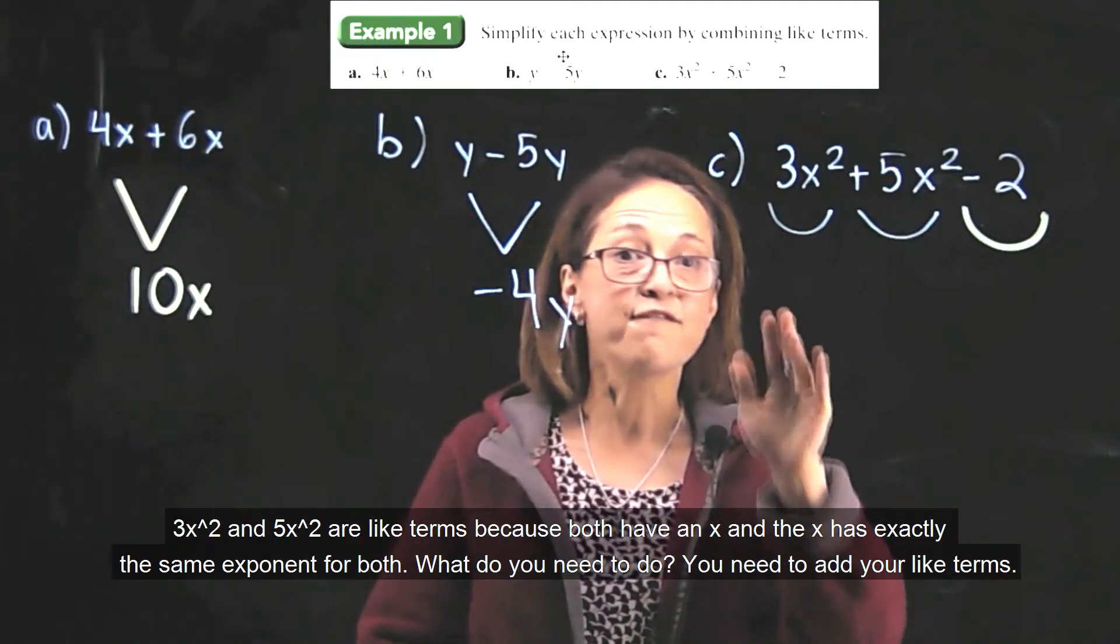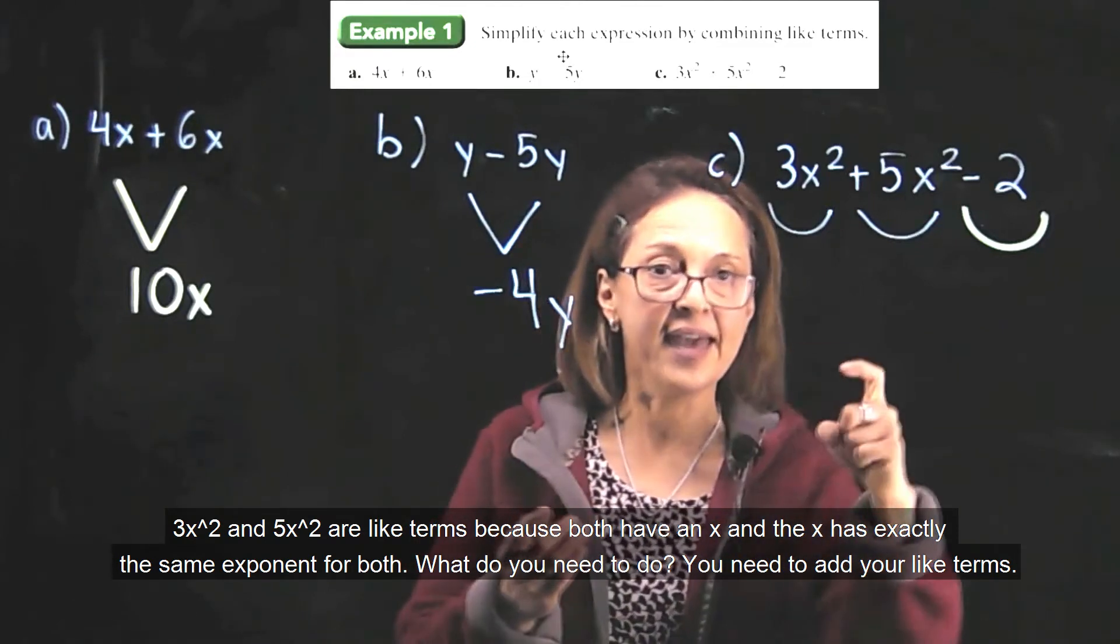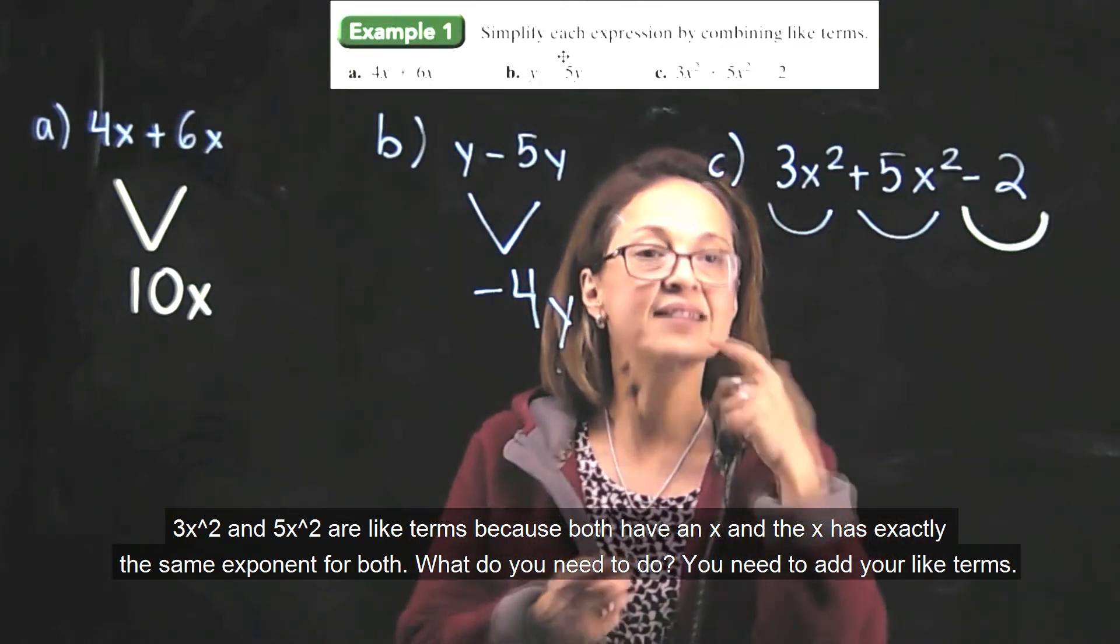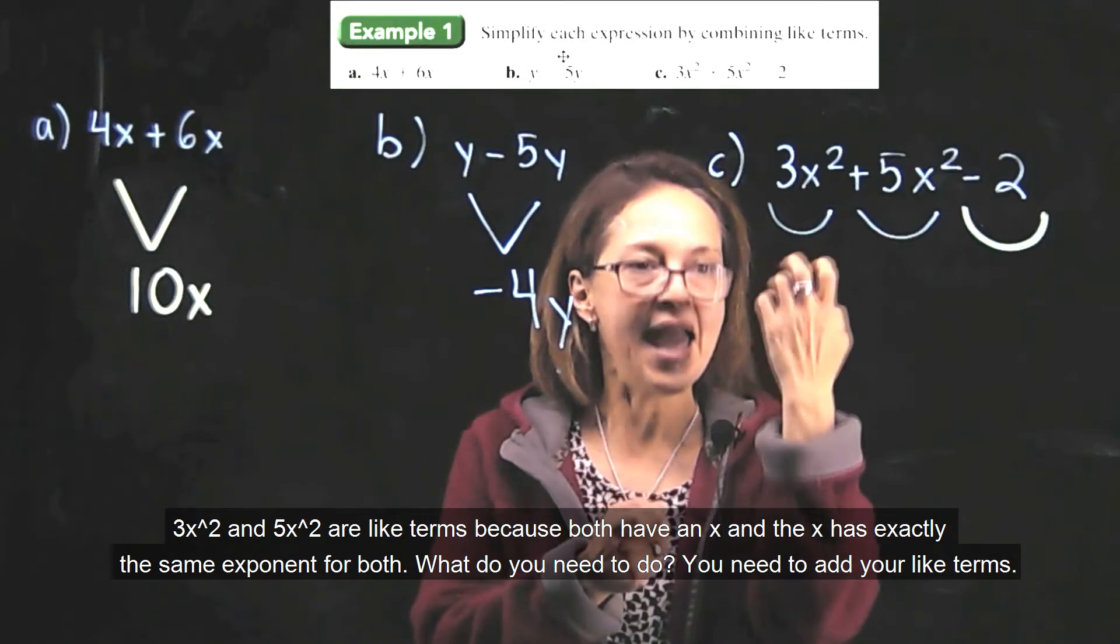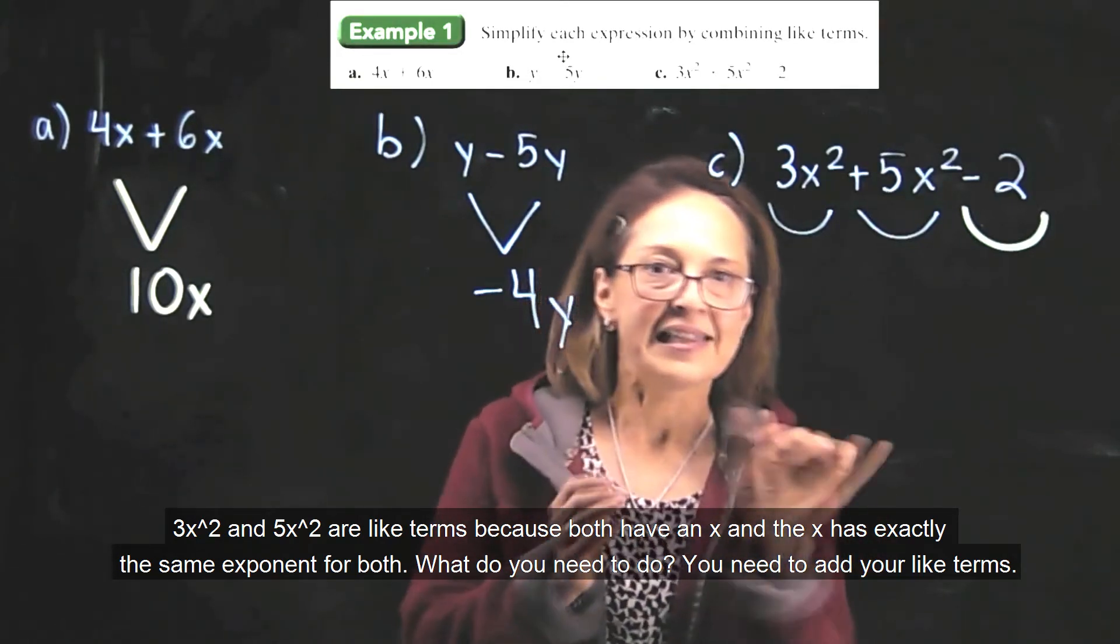3x squared and 5x squared are like terms. Why? Because both have x and x has exactly the same exponent for both. Then what do you do? Add the like terms.